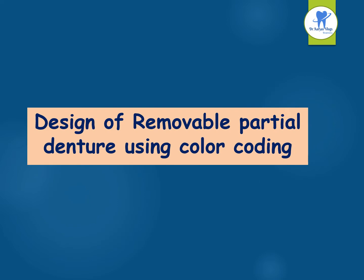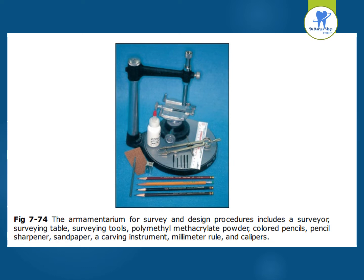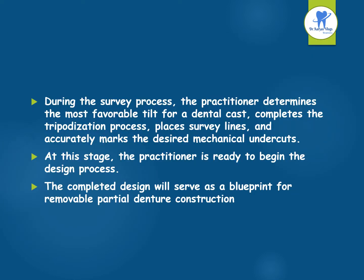Coming to the design of removable partial denture using colour coding. These are the armamentarium for survey and design procedures: surveyor, surveying table, surveying tools, polymethyl methacrylate powder, coloured pencils, pencil sharpener, sandpaper, carving instruments, millimeter rule and characters. During this process, the practitioner determines the most favourable tilt for a dental cast, completes the tripodization process, places the survey line, and accurately marks the desired mechanical undercuts. At this stage, the practitioner is ready to begin the design process, and the completed design will serve as a blueprint for RPD construction.